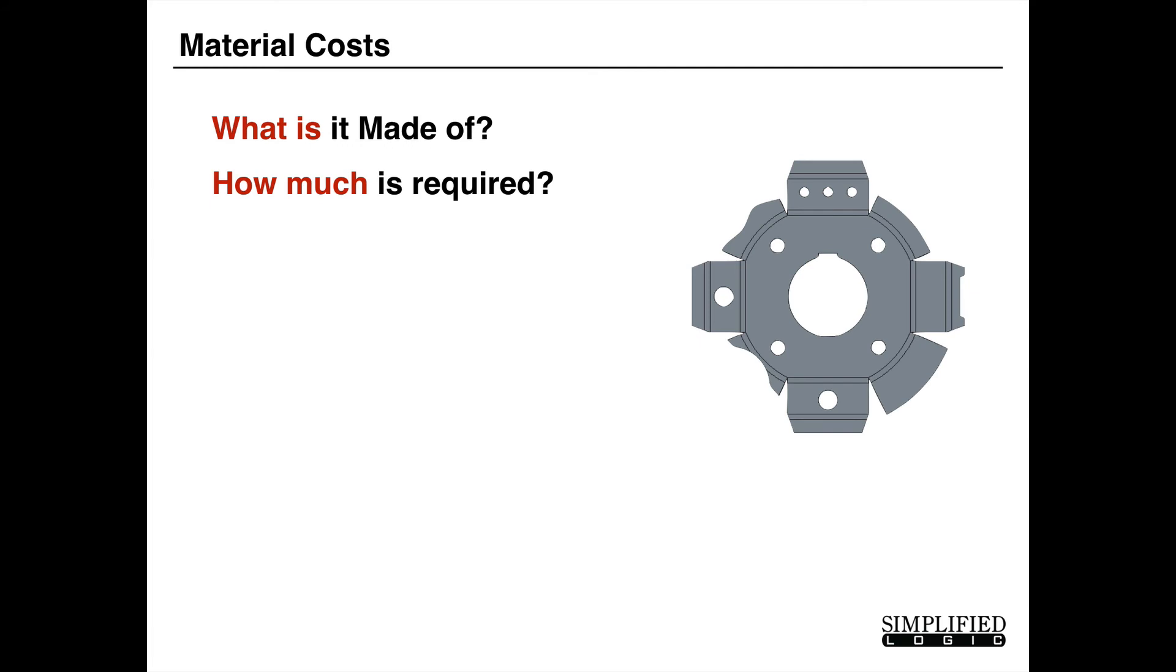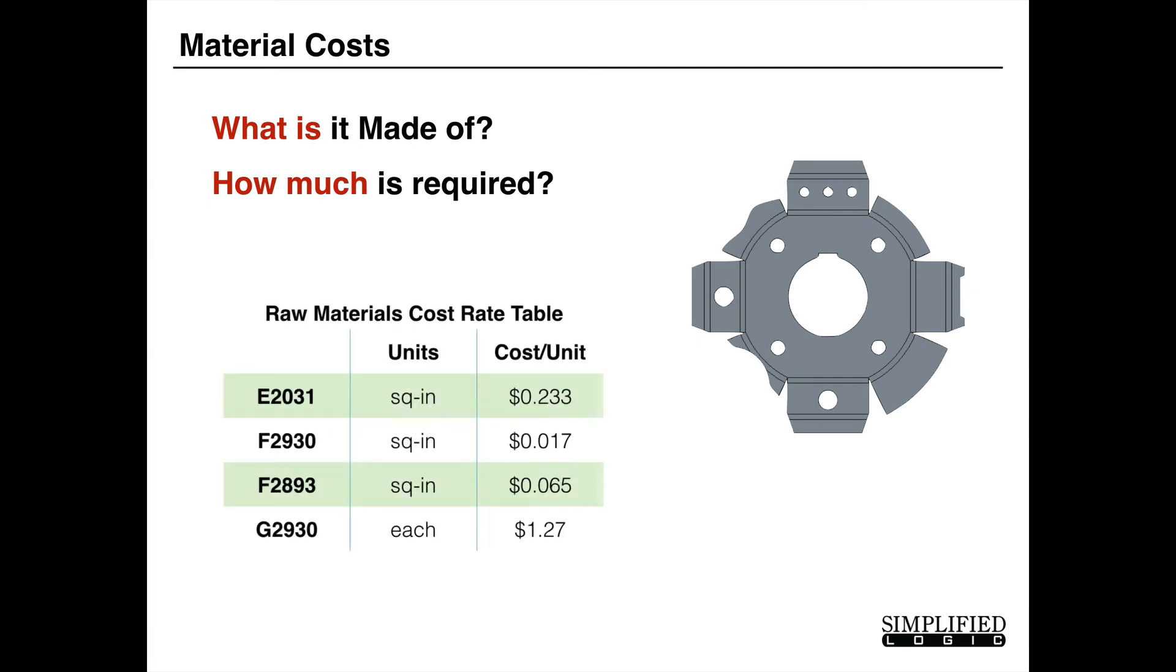The material costs are actually quite easy to extract. First thing you have to know is kind of what is it made of? Well, that can come from a parameter in the model. And then the second question is how much is required? So if we were actually to take the bounding box of this particular part and combine it with a parameter for the material cost, we could actually determine quite easily how much material is involved and what would it cost to make that.